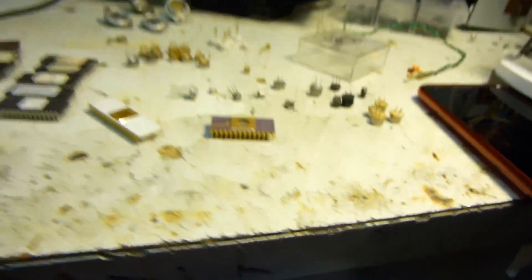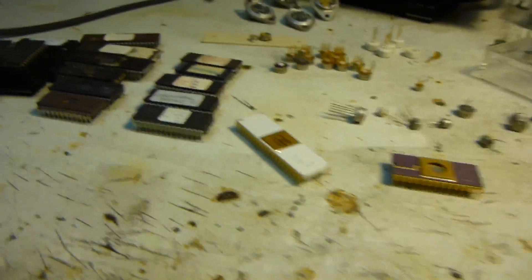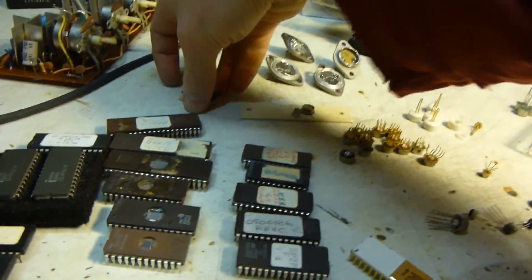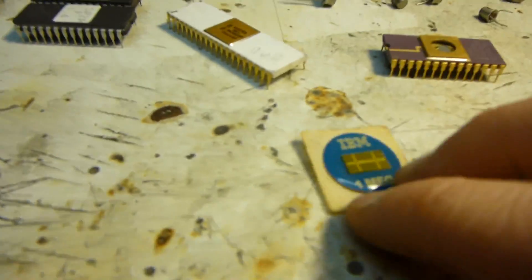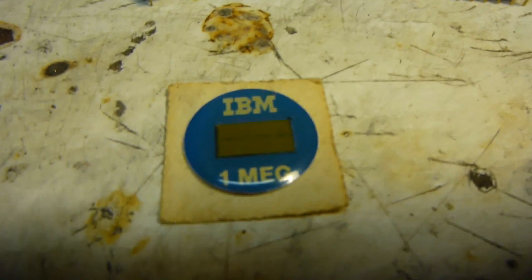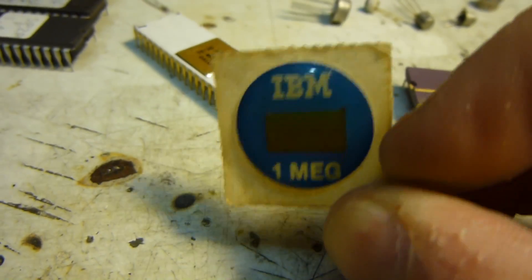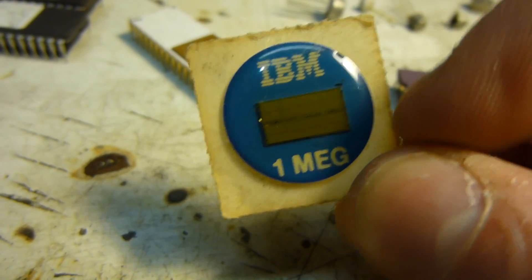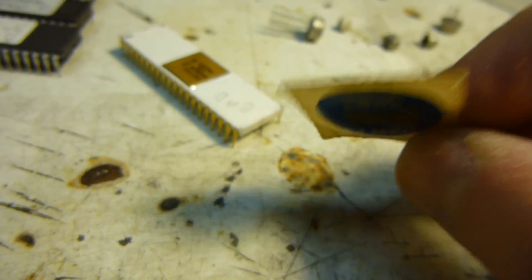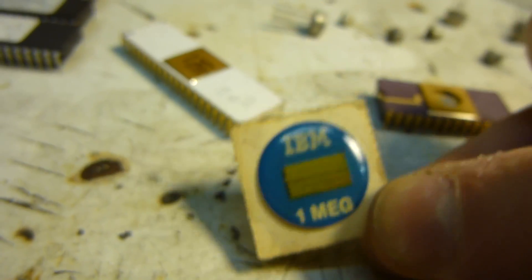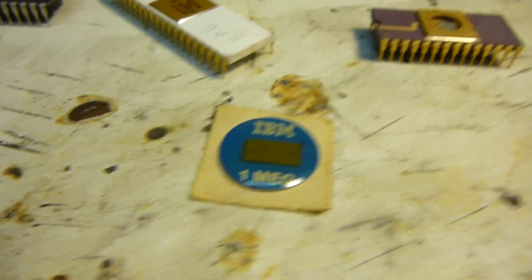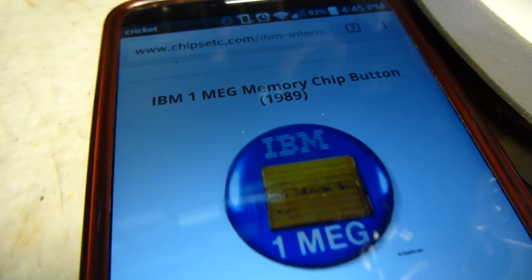But yeah, that's my collection of, oh yeah one more thing. I have this really old, or 19, I forget when it was made. An IBM one megabyte sticker. And it actually has a real IBM chip in there. Still got the original sticky backplate on it or back piece of paper. And I have the, so here it is 1989.